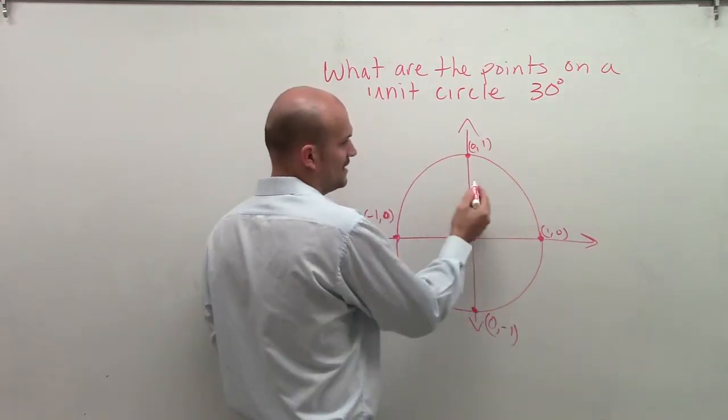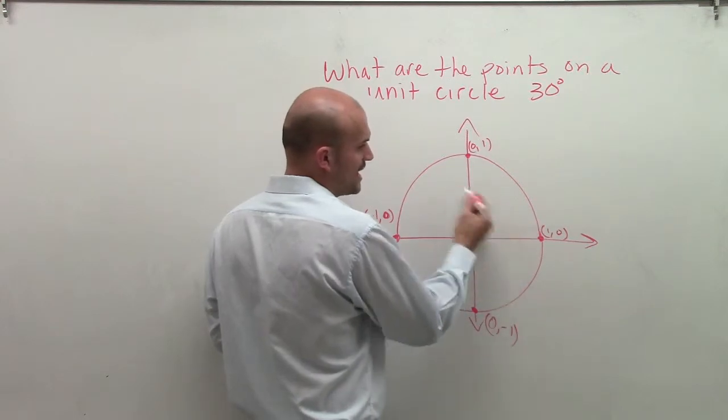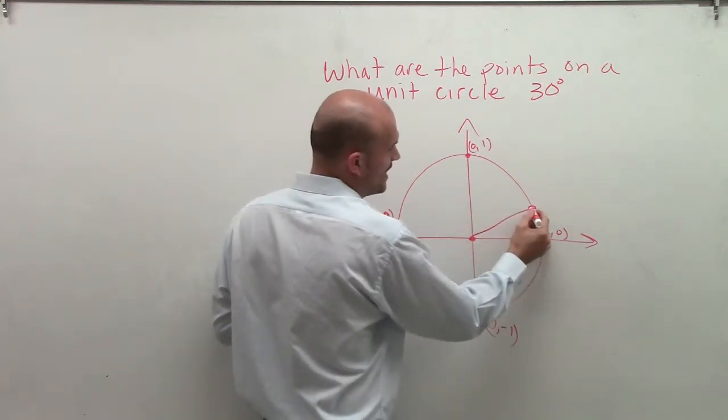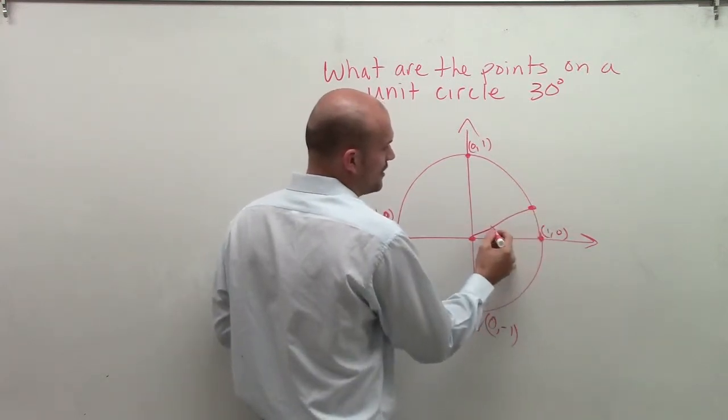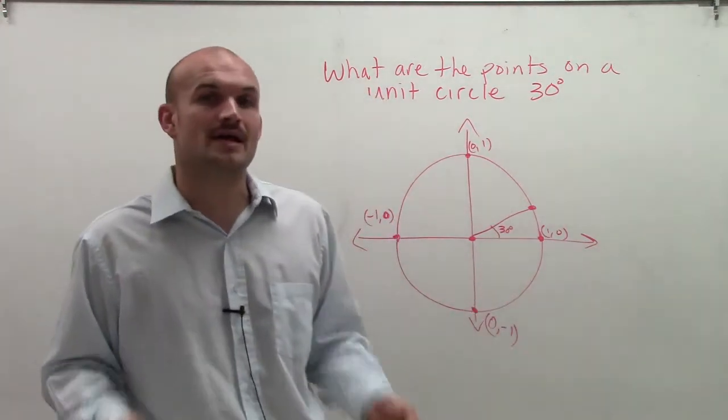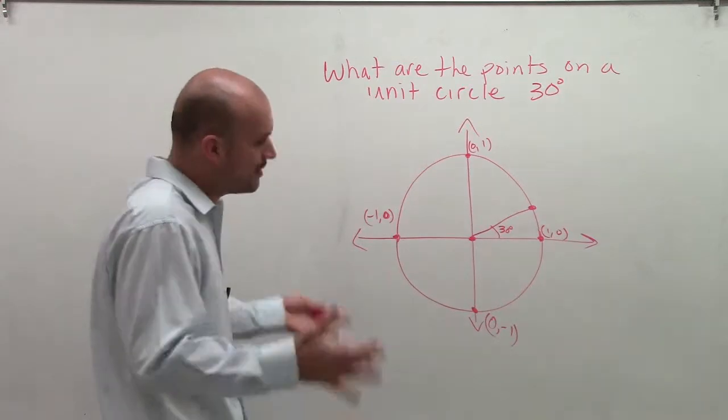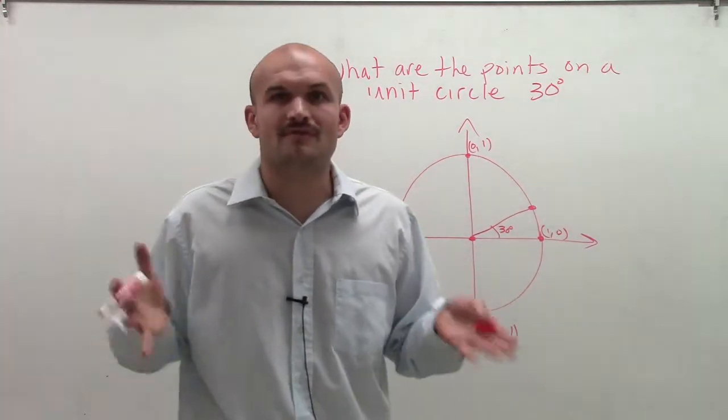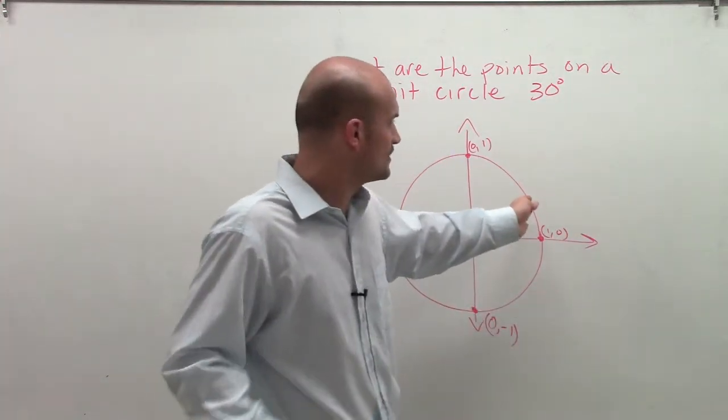So half of it was 180, 90. Well, what about if I broke 90 up into thirds, and I say, what about can I find the angle on the unit circle that relates to 30 degrees, and a central angle of 30 degrees? Well, what I'm going to do to find those coordinates, what I'm going to have to do is create a triangle.